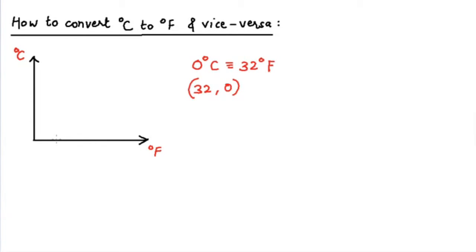I'll show 32 degrees Fahrenheit on the x-axis. If I look at this point, the y-coordinate is 0 degrees Celsius. So the coordinates of this point are (32°F, 0°C), and hence this point belongs to the graph.